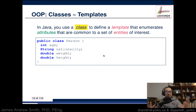For instance, we have a plan here for a person: 'public class Person'. So the template or plan is for a person. We will be creating objects of this type based on this plan, and these objects will have age, nationality, weight, and height — these are attributes, characteristics.